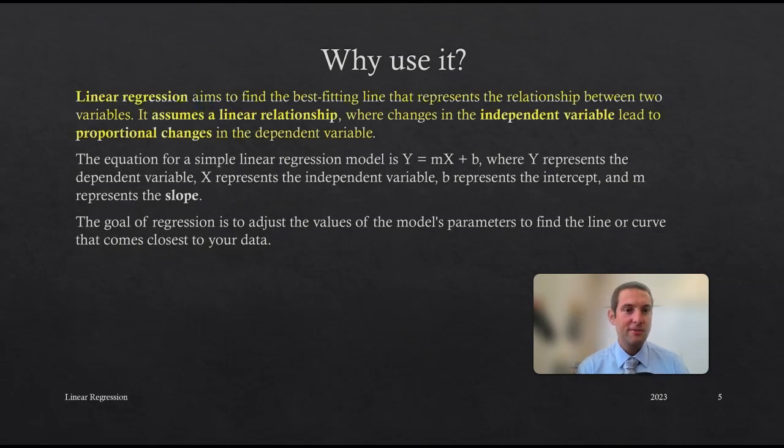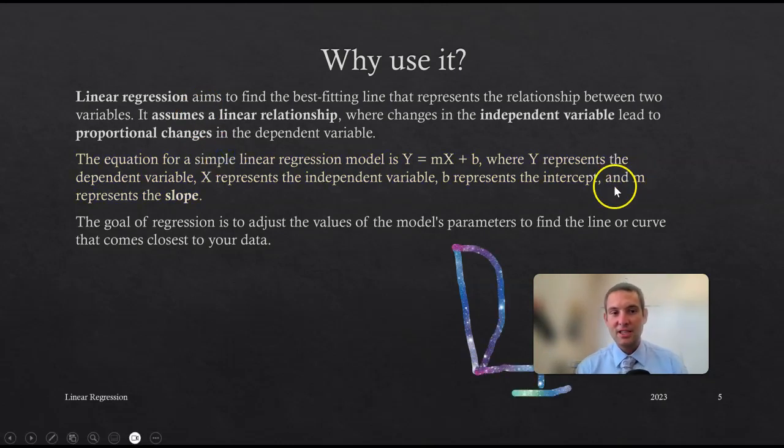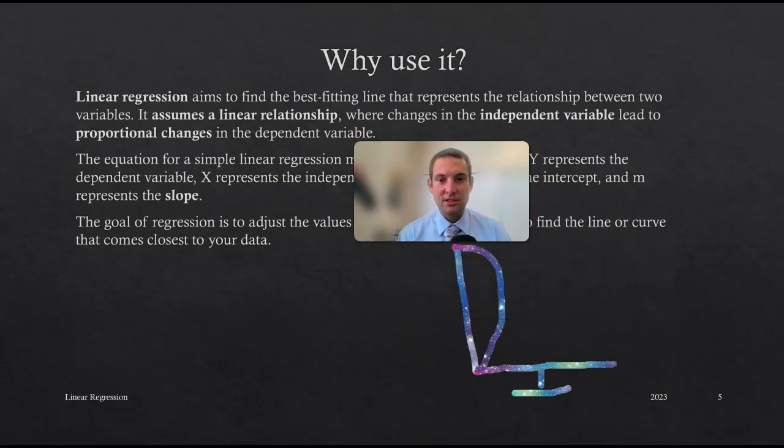The equation for a simple linear regression model is y equals mx plus b, where y represents the dependent variable, x represents the independent variable, b represents the intercept, and m represents the slope.